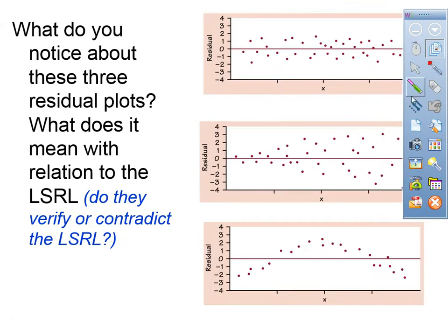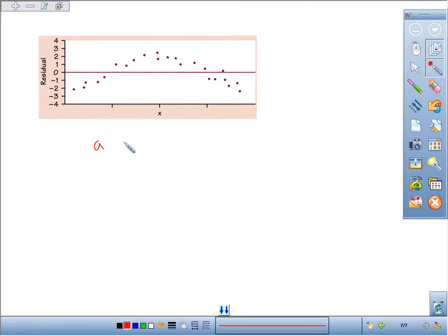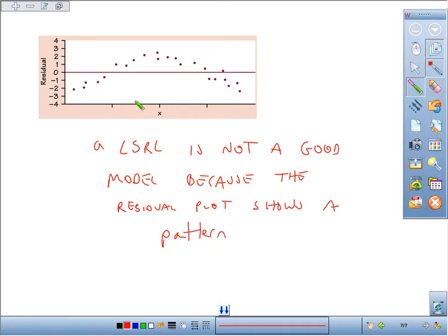In case you're wondering what a pattern would look like, if we have this plot here for our residual plot, we would say a least squared regression line is not a good model because the residual plot shows a pattern. Here it's pretty easy to see the pattern—that is a no-go. Not a good model. So, that's it for residual plots, and you'll be doing your work from there.